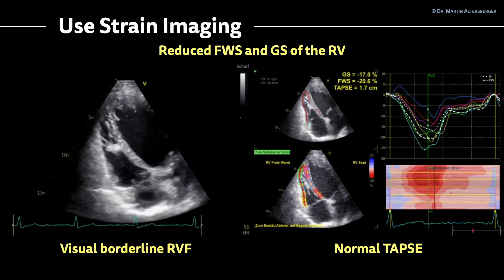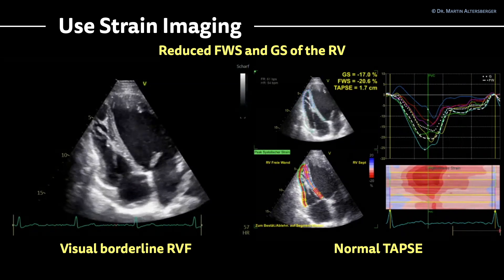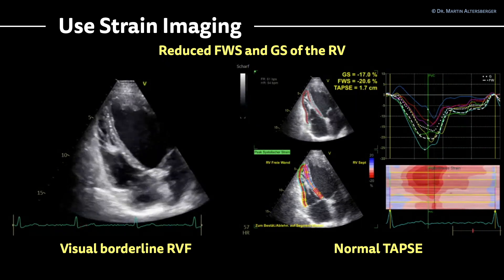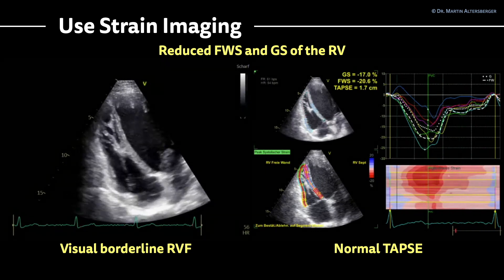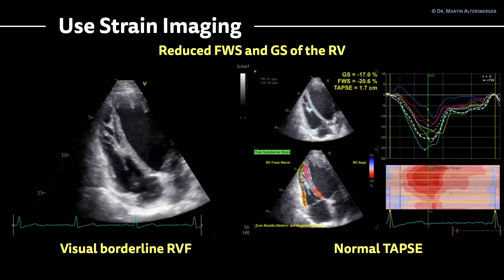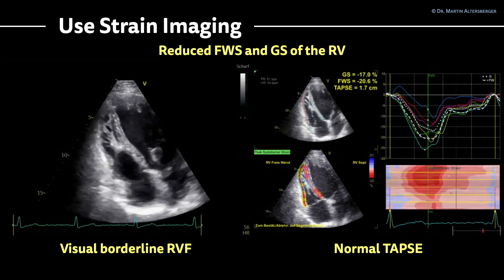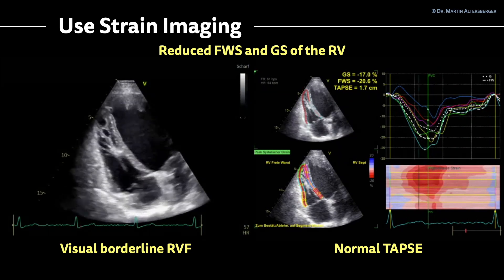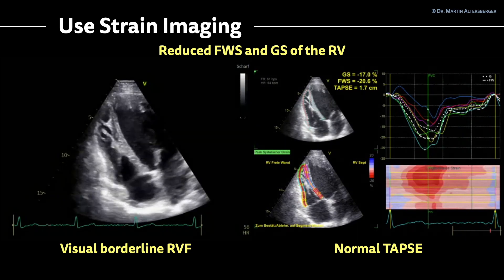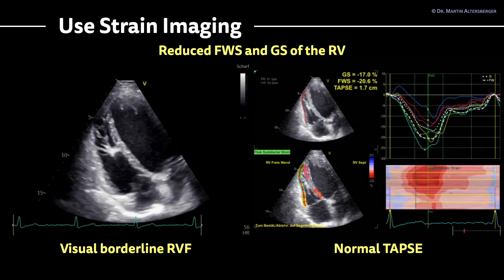TAPSE is, as expected from the visual assessment, normal to borderline normal at 17 millimeters. The global strain is also mildly reduced. So the visual borderline to mildly reduced right ventricular function is confirmed with strain imaging, giving you another follow-up parameter in this patient.